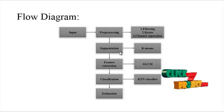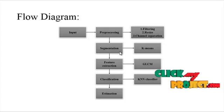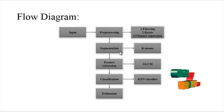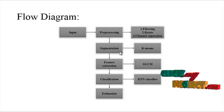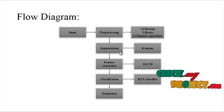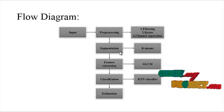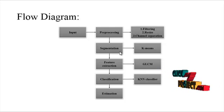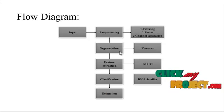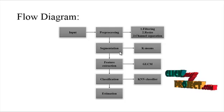In the filtering process, noise is removed by applying a Gaussian filter to the input image. In the resize step, the image is resized to 256x256 pixels. In channel separation, the RGB channels — red, green, and blue — are calculated as the final step of pre-processing. Then segmentation using the k-means algorithm is applied to segment the fruit image.